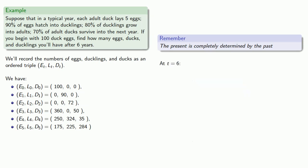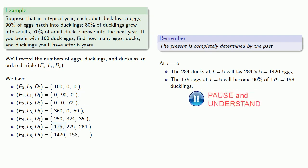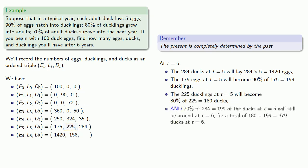And finally, at t equals six, the 284 ducks will lay 1,420 eggs. The 175 eggs will become 158 ducklings. The 225 ducklings we have will become 180 ducks. And 70% of our existing ducks will still be around for a total of 379 ducks.